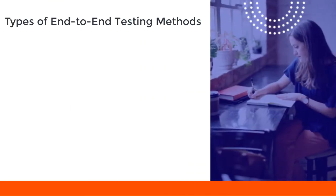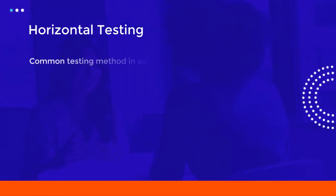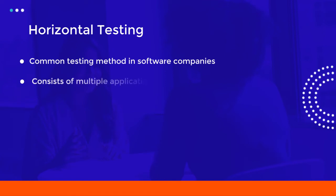This is the most basic end-to-end testing practice. There are two types of end-to-end testing methods: the first is the horizontal testing method, and the second is the vertical testing method. The horizontal testing method is the most common method used in software companies, and this testing process consists of multiple applications.